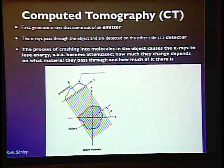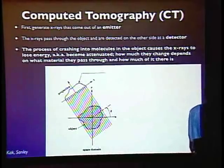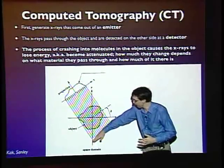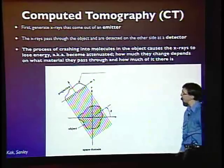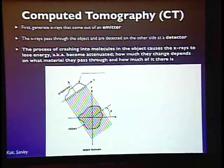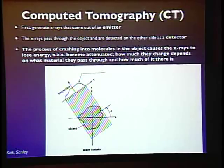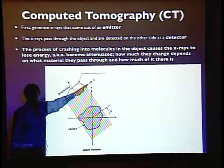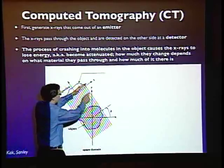For computed tomography: there is a device called an emitter — an x-ray emitter — that generates high-frequency, high-energy beams. It gives off a plane of rays. You have some object, like your abdomen or brain, and you are trying to understand the internal structure. The x-rays go through the object and are detected by a detector on the other side.